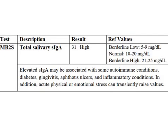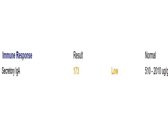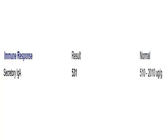And this one is 31, which is clearly elevated. Here, secretory IGA on the GI Map comprehensive stool panel — 173 is low according to this test. And 531 is within range but it's on the lower side, so it's less than the optimal range given earlier.